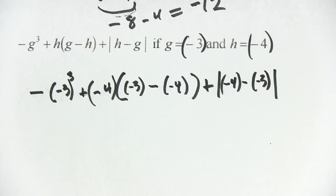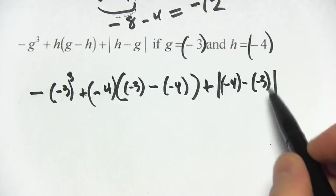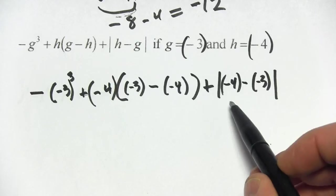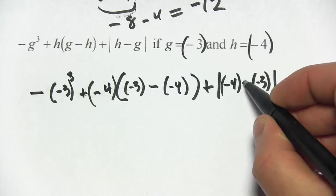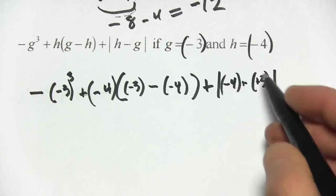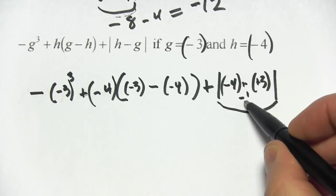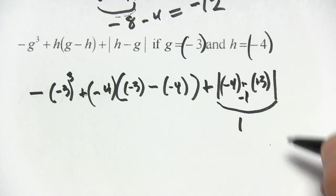Alright, so looks fairly complex but let's take this piece at a time. I think I'm going to start with what's in the absolute value sign here. We have negative 4 minus negative 3. Well minus a negative is just like plus, so negative 4 plus 3 is negative 1. But then we take the absolute value of this, that turns any negative number into a positive, so that's just 1.